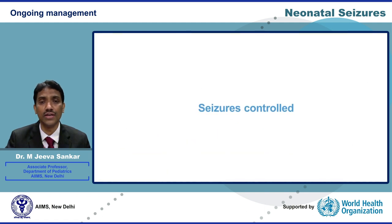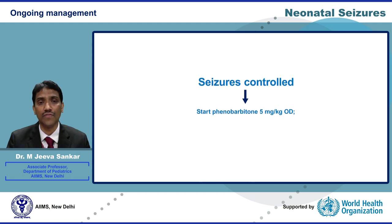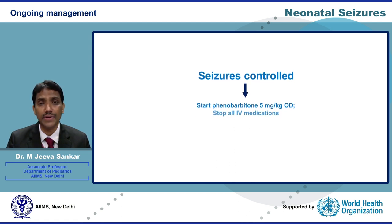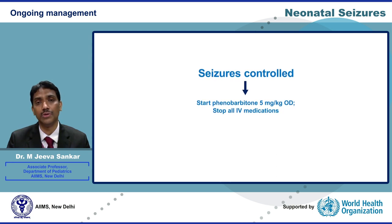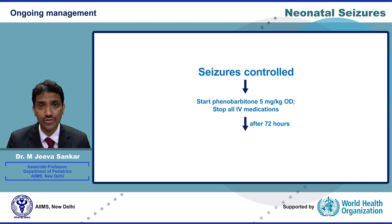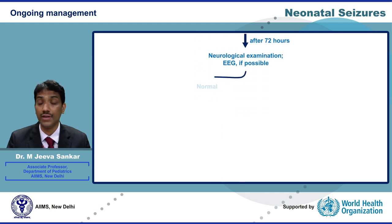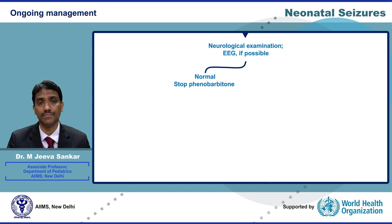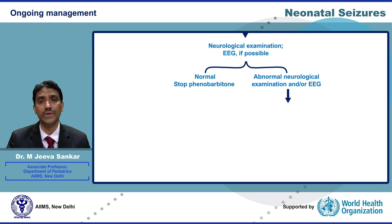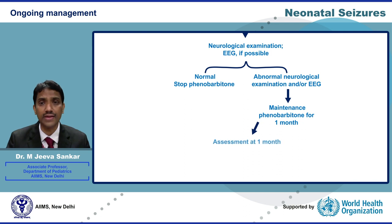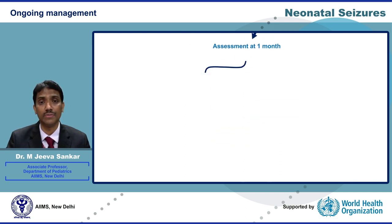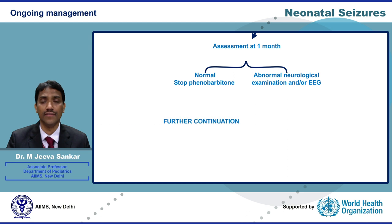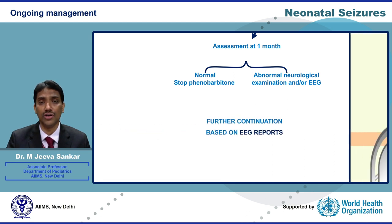Once the seizures are controlled, maintenance dose of phenobarbitone should be started 12 hours after the last seizure. IV medications should be stopped one by one, with phenobarbitone being the last. After 72 hours, neurological examination and EEG should be performed. If both are normal, phenobarbitone can be safely stopped. If either is abnormal, the neonate should be continued on maintenance phenobarbitone and reassessed after one month. If neurological examination is then normal, phenobarbitone can be stopped; if abnormal, EEG should be done and further continuation of therapy based on EEG results.